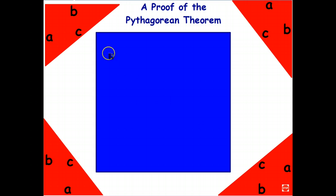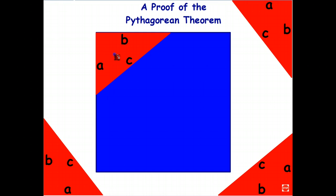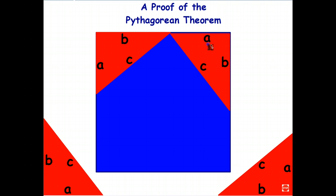And here I have a large blue square. So what I'm going to do is just take four copies of this triangle, and drag them into the four corners of the square, like so.